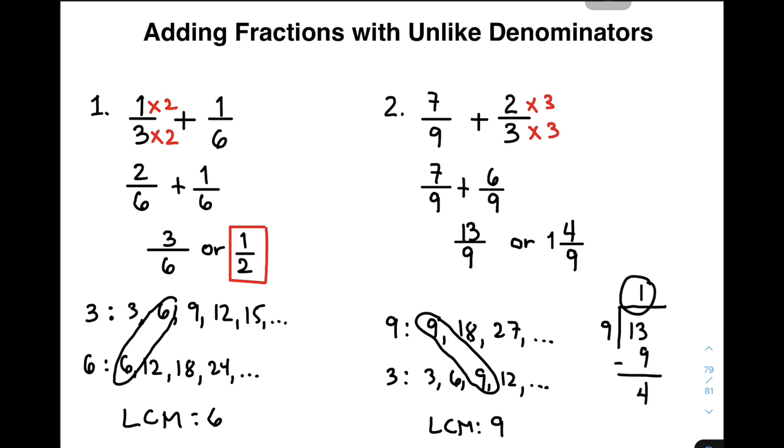This quotient is your whole number. The divisor is your denominator. The remainder is your numerator. So this is our answer for item number 2.